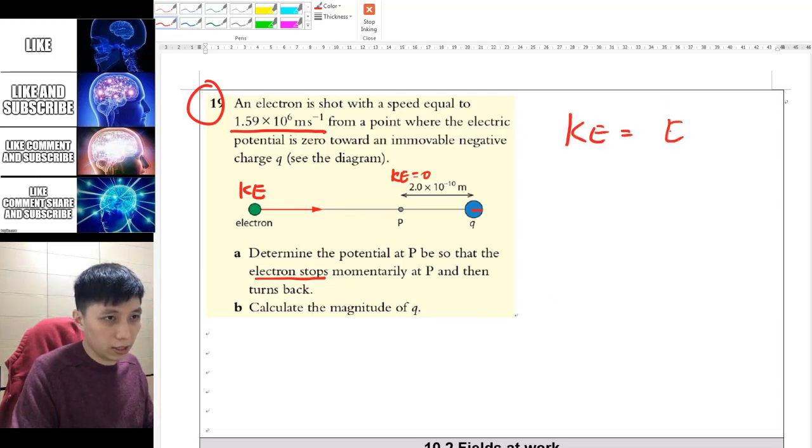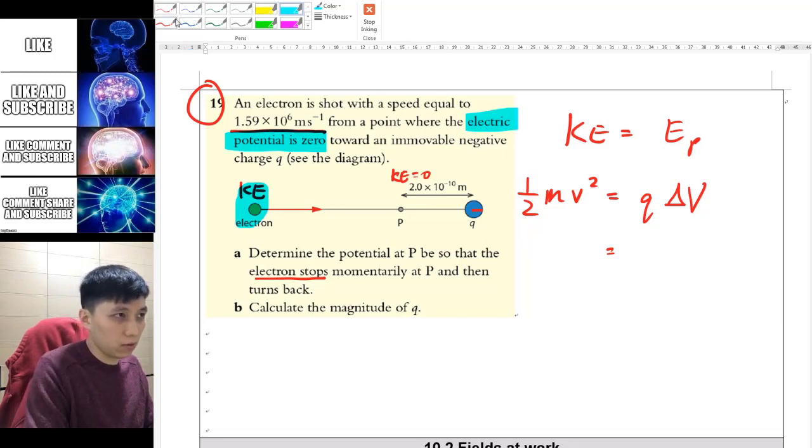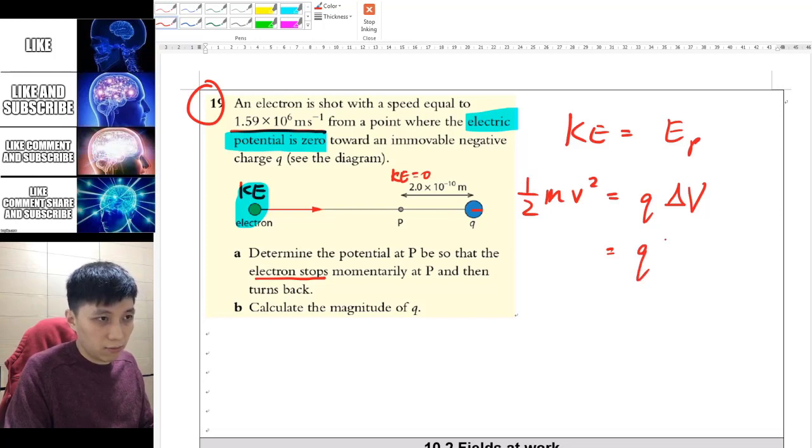KE equals half mv squared, which we know. For electrical potential, since it's zero at the initial point starting from infinity, that leaves you with the potential at P. The q here is simply the charge of the electron.